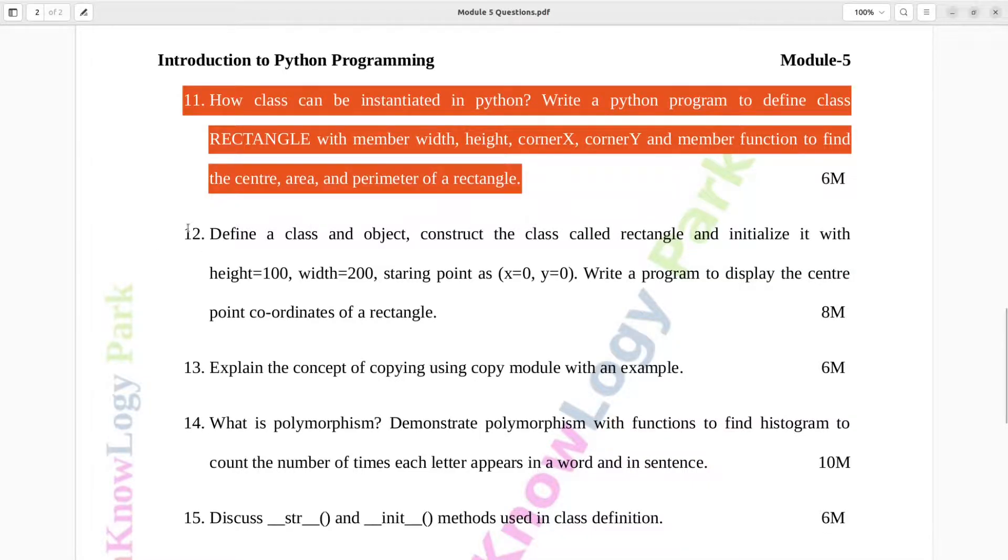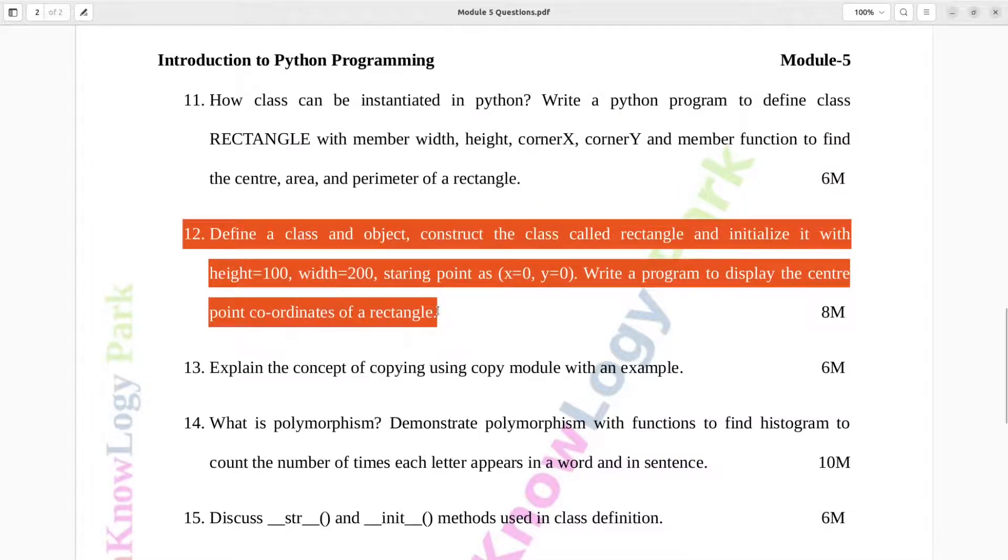Question number twelve. Define a class and object. Construct the class called rectangle and initialize it with I 100 wid 200. Starting point as x equals to zero, y equals to zero. Write a program to display the center point coordinates of a rectangle. Eight marks.